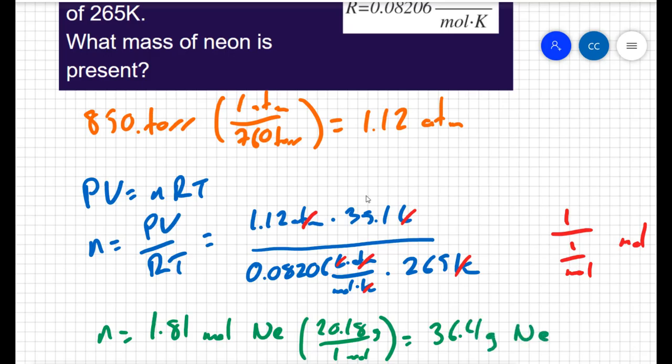The question is asking for the mass of neon gas. So neon has a molar mass of 20.18 grams for every 1 mole. So when I convert that to grams, I get a mass of 36.4 grams of neon.